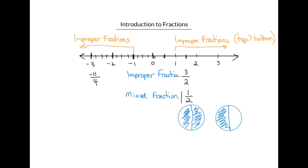As a mixed fraction, we've gone over two whole steps plus three out of the four steps on the way from negative 2 to negative 3. So negative 11 fourths is also equal to negative 2 and 3 quarters.